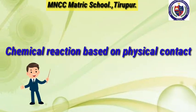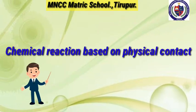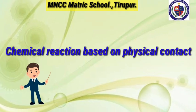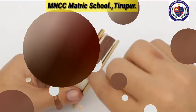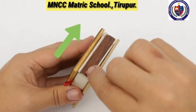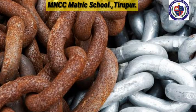Now we move to chemical reactions based on physical contact. Could you remember some day-to-day activities like burning of a matchstick on rubbing, or iron materials turning reddish-brown? These changes are due to chemical reactions by contact in physical state.